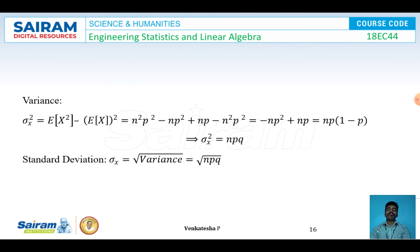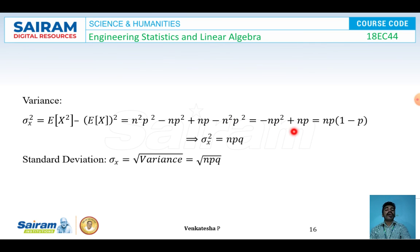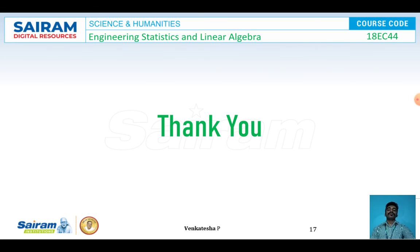Finally, variance = E[X²] − (E[X])² = (n²p² − np² + np) − n²p². Cancelling n²p² and taking np as common factor gives np(1−p) = npq. So Var(X) = npq and standard deviation = √(npq). In the next lecture video we will discuss one more application — the Poisson distribution — and find its mean, variance, and standard deviation. Thank you.